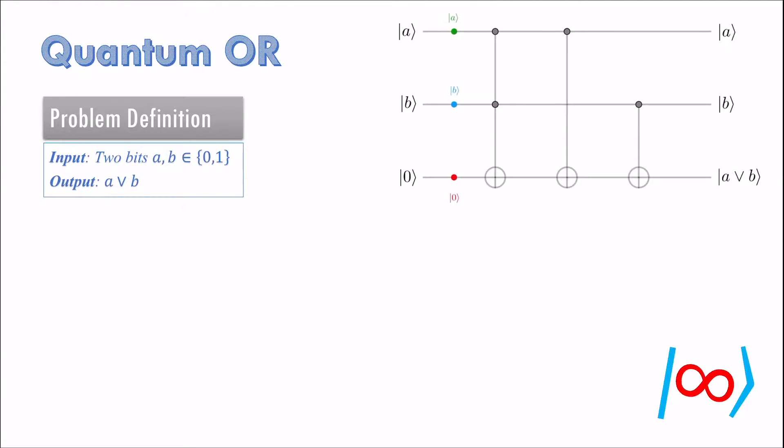OR of 2 bits is a function that is 0 only when both the bits are 0, otherwise OR is 1.